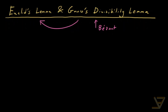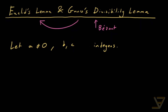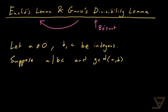Let's start off with the assumption that A is a non-zero integer and B and C are integers. Suppose A divides BC and GCD(A, B) is equal to 1, so A and B are co-prime.